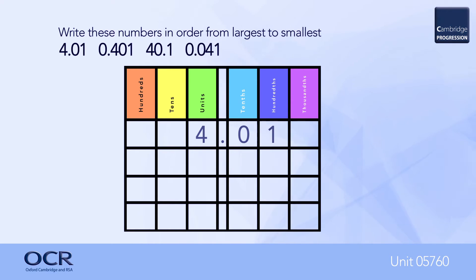The numbers increase moving from right to left. Clearly, 40.1 is the largest and 4.01 is the next largest. Considering the remaining two numbers, 0.401 and 0.041, 0.401 is larger than 0.041.